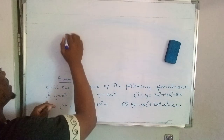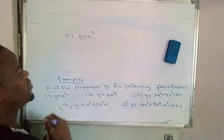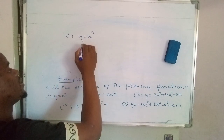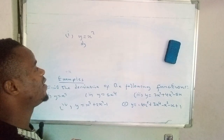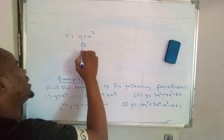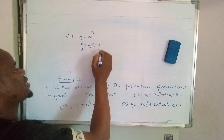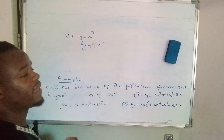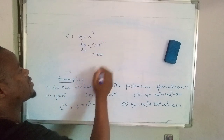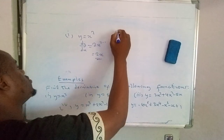Number one: y = x². If we differentiate that, we write dy/dx. The 2 will drop to give 2 times x, then we subtract 1 from the power: 2 minus 1 is 1, giving us 2x. In most cases we don't show the power of 1, so the final answer is 2x.